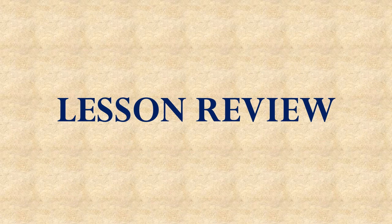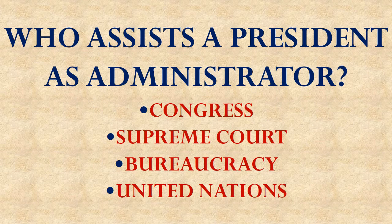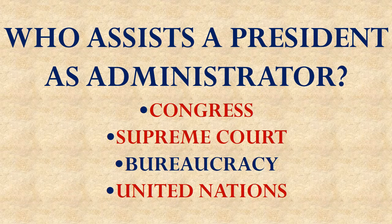Now let's review what we learned in this lesson. Who assists a President as the administrator for the country? Is it Congress, the Supreme Court, the bureaucracy, or the United Nations? It's the bureaucracy — those four million people that work for the President in the executive branch — who assist the President in administering the laws of the country.